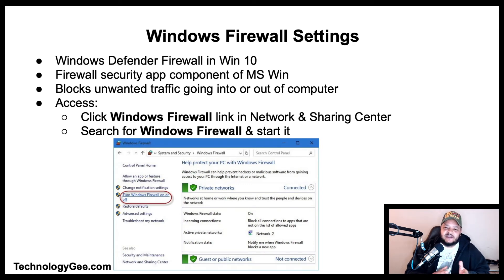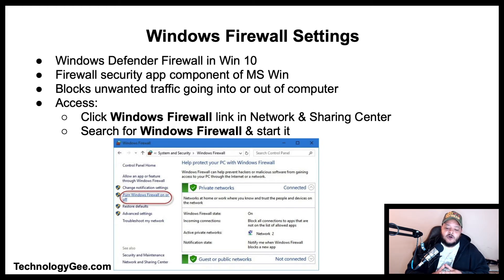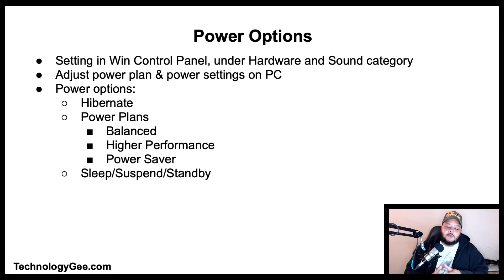Windows Firewall, also known as Windows Defender Firewall in Windows 10, is a firewall security application component of Microsoft Windows. It can block unwanted traffic going into or out of the computer. You can access Windows Firewall by clicking the Windows Firewall link in the Network and Sharing Center, or by searching for Windows Firewall.